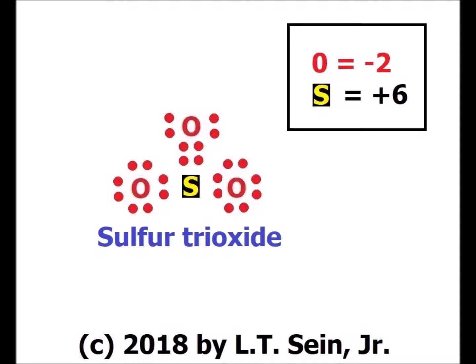For our final compound, sulfur trioxide (SO₃), sulfur brings in 6 electrons and each oxygen brings in 6, giving a 24-electron system. To satisfy the octet rule for both oxygen and sulfur, we need one sulfur−oxygen double bond and two single bonds, giving three possible resonance structures. Because sulfur is bound to the more electronegative oxygen, all shared electrons are credited to oxygen. Sulfur started with 6 electrons and now has 0, so it has an oxidation number of +6 in sulfur trioxide.